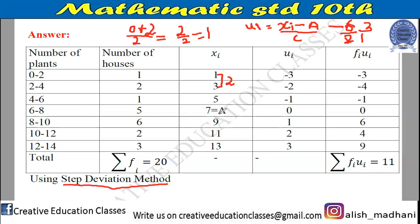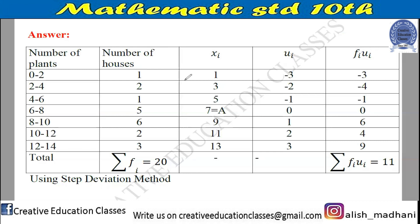When class lengths remain the same, u_i values go as −3, −2, −1, 0, 1, 2, 3 — you can select 'a' at the zero position wherever you want. Next we find f_i × u_i: 1 × (−3) = −3, 2 × (−2) = −4, 1 × (−1) = −1, 5 × 0 = 0, 6 × 1 = 6, 2 × 2 = 4, 3 × 3 = 9.